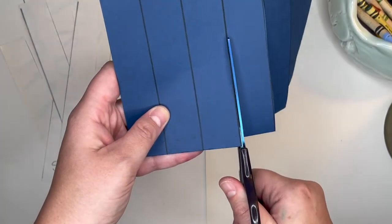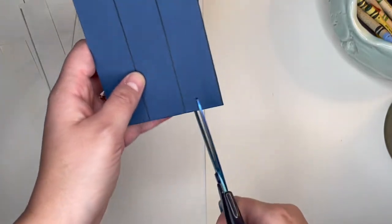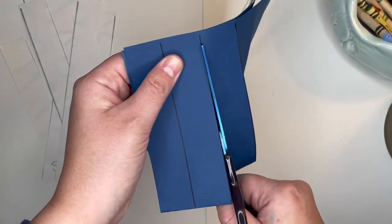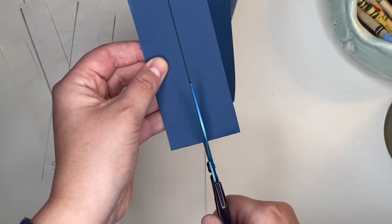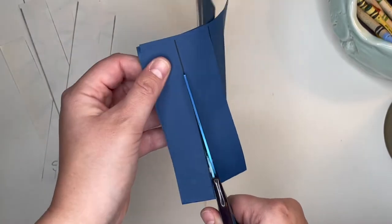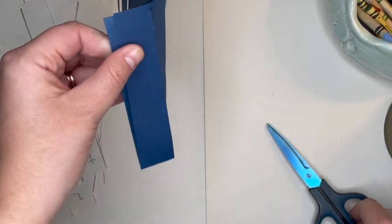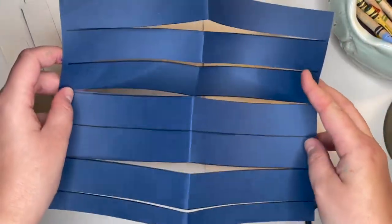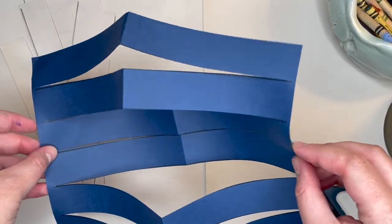Continue until you have cut all of the different lines, leaving a space at the end of your paper so that your strips do not come apart. This is your loom that you have just made. Many different strips, but they are all stuck at the ends.